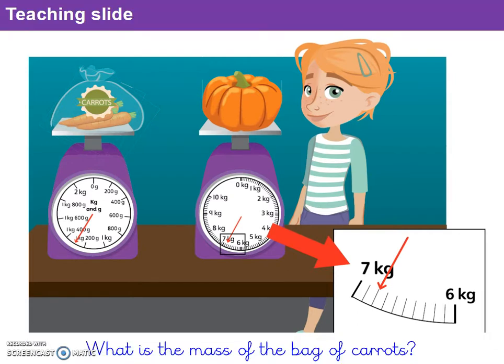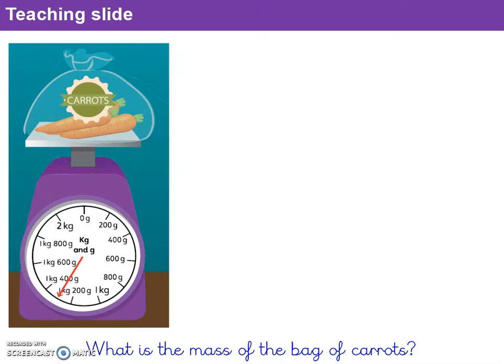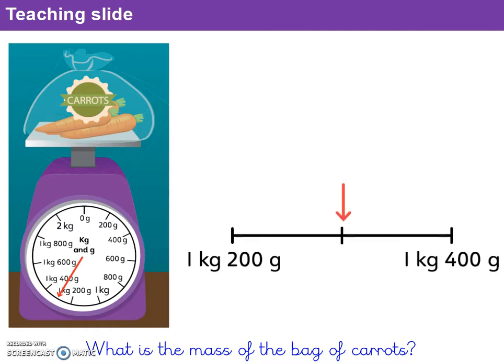Let's begin by looking at question 1a. What is the mass of the bag of carrots? In order to find out the mass of the carrots, let's think about the strategies we looked at yesterday. We're going to look at the gap between two of these named or labeled intervals. In this case, we can see we've got 1kg and 200g, and the following one is 1kg 400g. We can see, now we've got that scale shown on the horizontal line, that our arrow is pointing to the midpoint, the point in the middle.